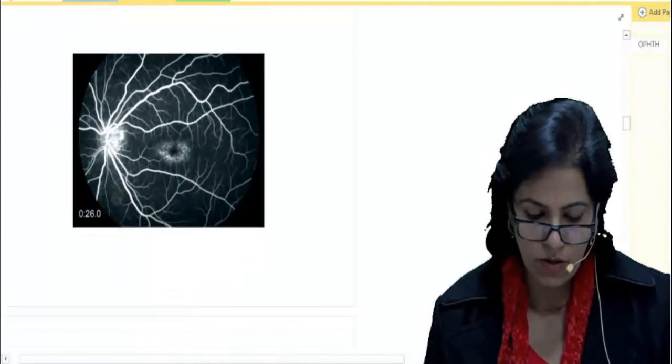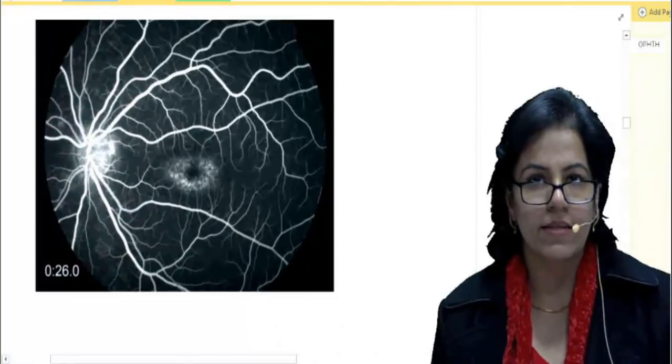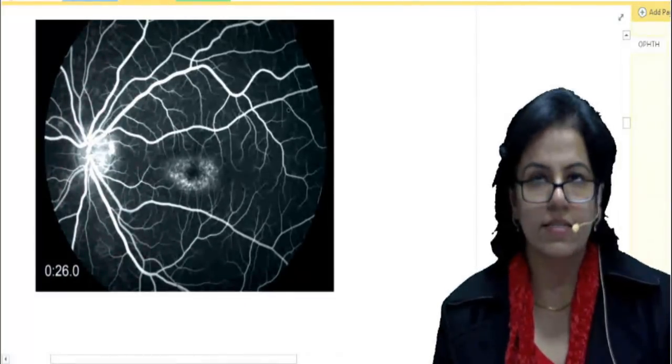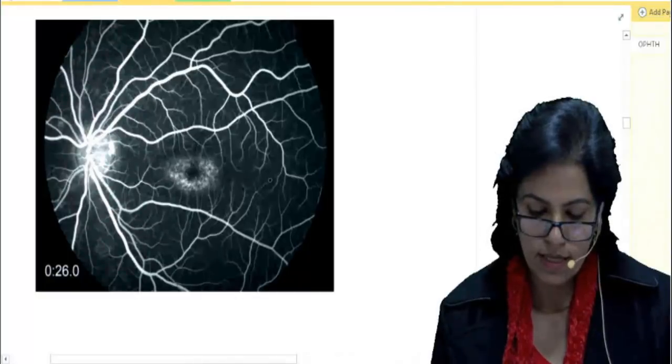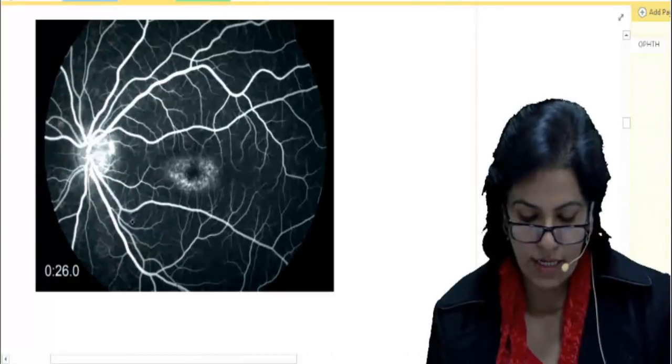Let's look at what we are talking about. See, this is your silent choroid. These are the whole background. Can you see? It is dark. This is your choroidal fluorescence which is not seen, absent fluorescence of the choroid. So, the blood vessels are prominently seen.